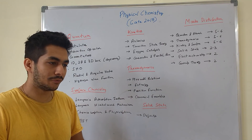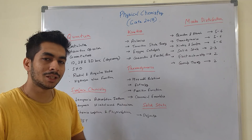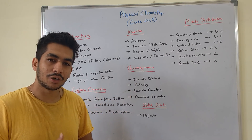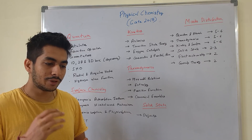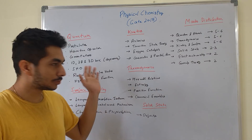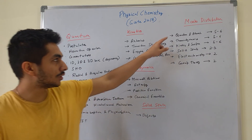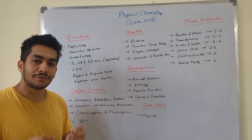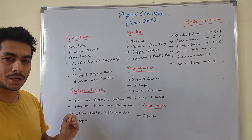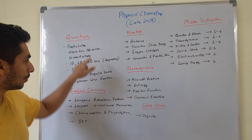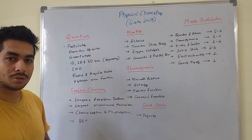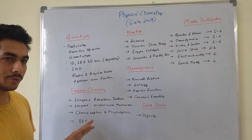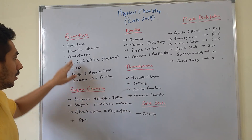Quantum chemistry: earlier it might have been easier to leave it, but now there is a lot of dependency and focus on quantum chemistry, observed in GATE as well. From the last three years, about five to six marks questions have been coming from quantum chemistry. In quantum chemistry, thankfully there are only a few selected topics to focus on. You have to focus on postulates of quantum mechanics, and Hermitian operators — this is a very very important topic.